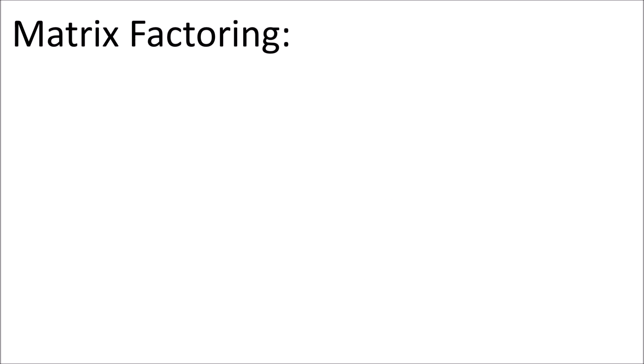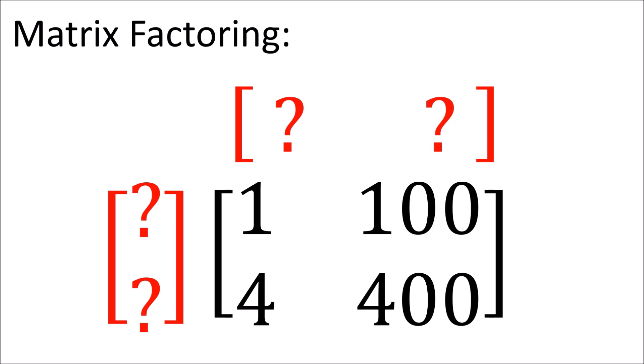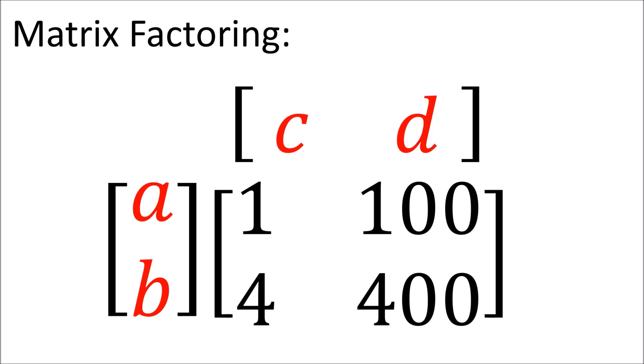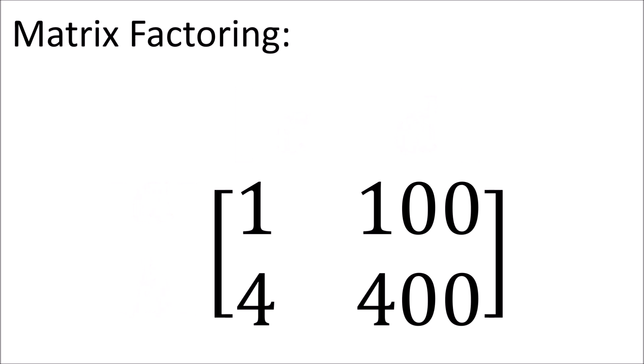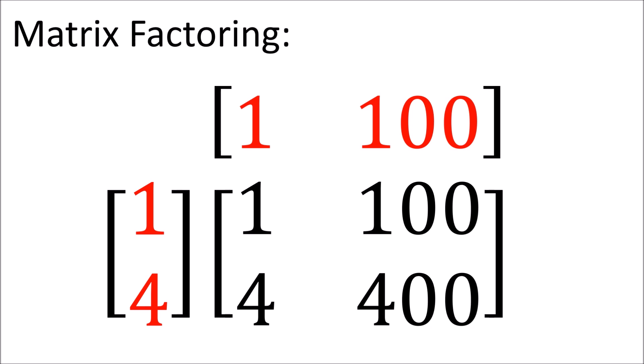Now it's also possible to do this process in reverse. Given a 2x2 matrix, we can ask how to break it up into a column times a row. You can think of this as trying to solve for four variables A, B, C, D. One solution is the column (1, 4) and the row (1, 100). However, there are actually multiple possible solutions to this problem.